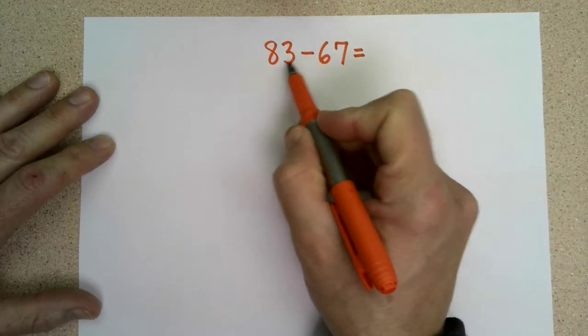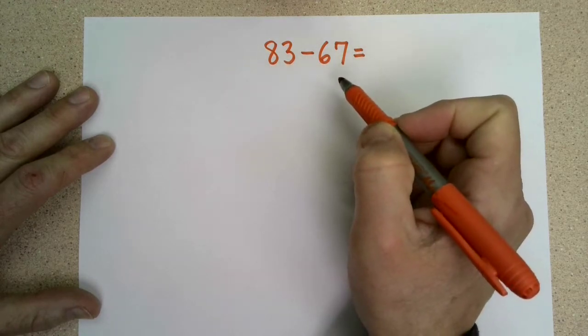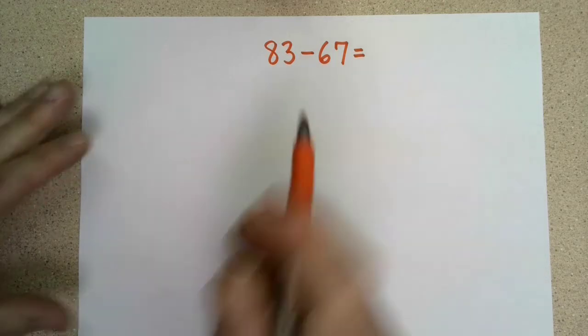Now, I know I can take 60 away from 80, but I really can't take 7 away from 3 unless I do some regrouping or do something different. So let's try this out.